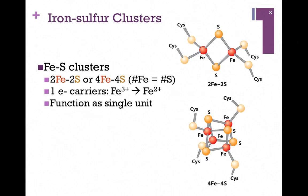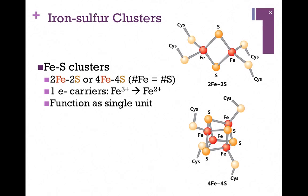Let's look a bit more at those iron-sulfur clusters. They could be two-iron, two-sulfur clusters — the iron atoms pictured in an orange color, and the sulfur atoms in a brighter orange. As you can see, a two-iron, two-sulfur cluster is shown at the top of the screen, and a four-iron, four-sulfur cluster at the bottom. The iron atoms are actually complexed to four sulfur atoms each. Only two of these are sulfide atoms; the other sulfurs are part of the sulfhydryl side chains of cysteine. Likewise for the four-iron, four-sulfur clusters.